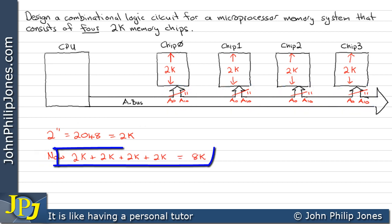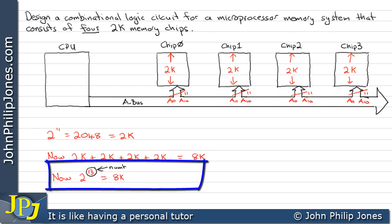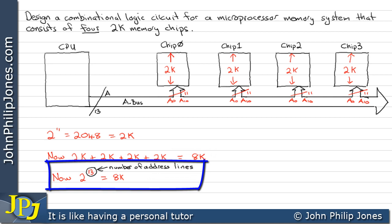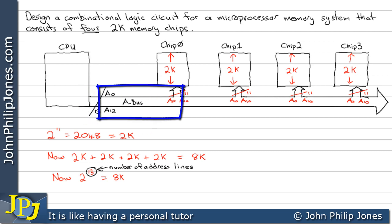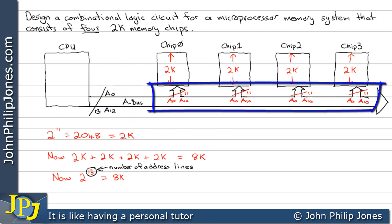Overall we have 8K of memory, which means we have to raise 2 to the 13. So the overall address bus needs to be 13 address lines from A0 through to A12. Looking at the schematic diagram, the address lines going into the chips go from A0 to A10.